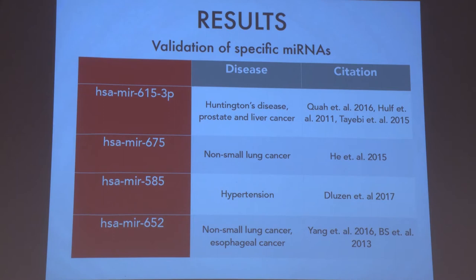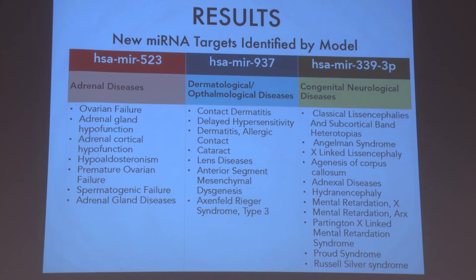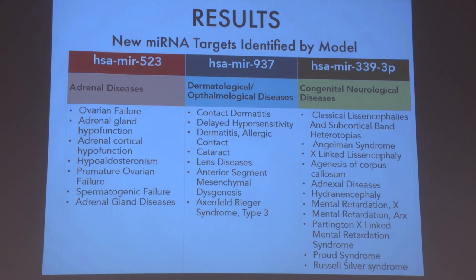More importantly, our model was able to identify two new putative biomarkers and therapeutics. Micro-RNA 523 was identified as being correlated to adrenal diseases and dermatological and ophthalmological diseases. Micro-RNA 339 was identified as being linked to congenital neurological diseases — this is interesting because in prior literature, micro-RNA 339 has only been examined as a potential target for cancers. So this research has identified a new possible application for this micro-RNA.